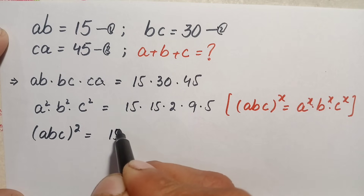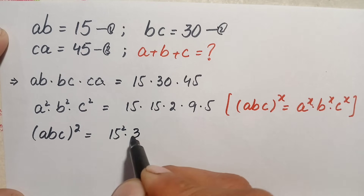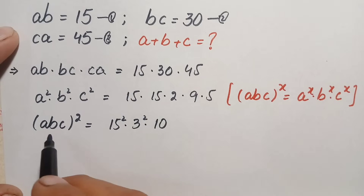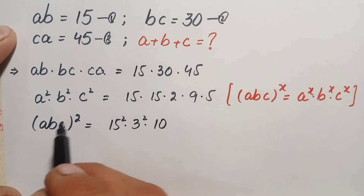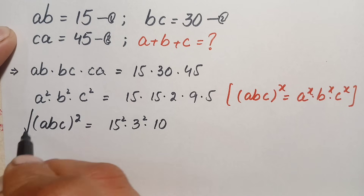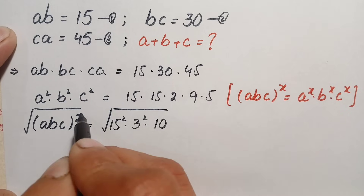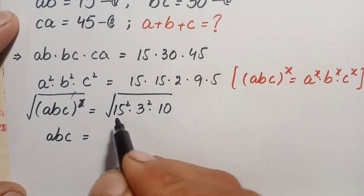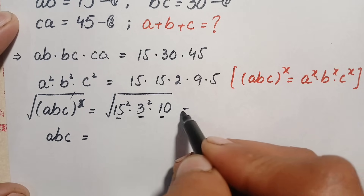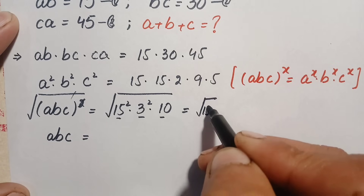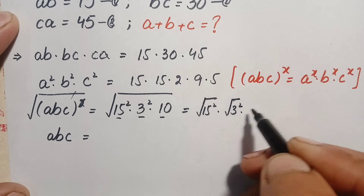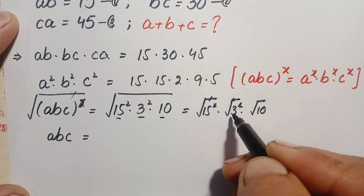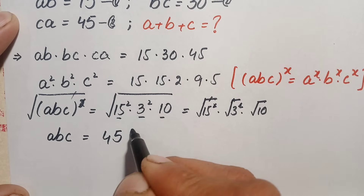We have (abc)² = 15² × 3² × 10. Taking the square root on both sides eliminates the square on the left, giving abc. On the right, square root of 15² gives 15, square root of 3² gives 3, and we are left with square root of 10. So abc = 15 × 3 × √10 = 45√10. We label this as equation number four.